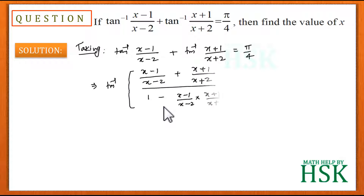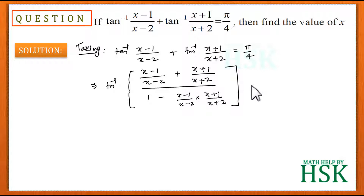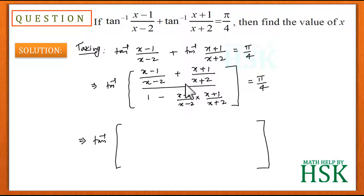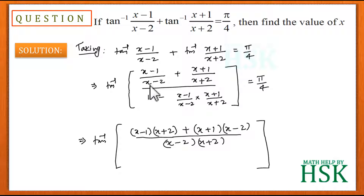Applying the formula of tan⁻¹(x) + tan⁻¹(y), we can write this as tan⁻¹((x+y)/(1-xy)) = π/4. Now we are going to take the LCM and simplify the numerator and denominator. The LCM would be (x-2)(x+2).